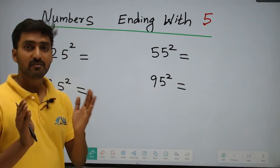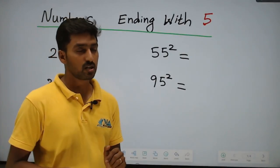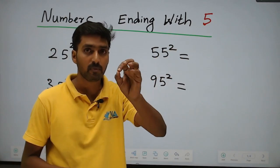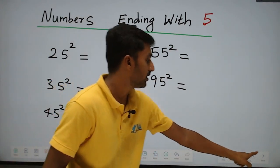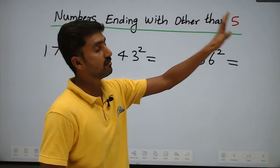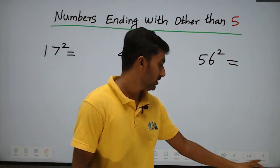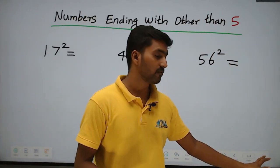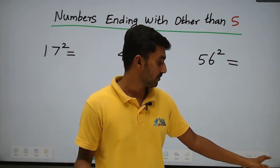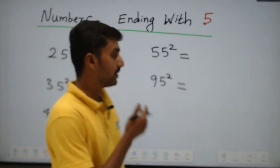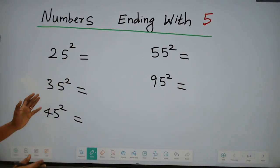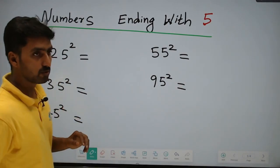There are 2 types of square shortcuts. Type one: numbers ending with 5. Type two: numbers ending with other than 5 — that is, 1, 2, 3, 4, 6, 7, 8, 9. This is very simple; just based on the last digit.